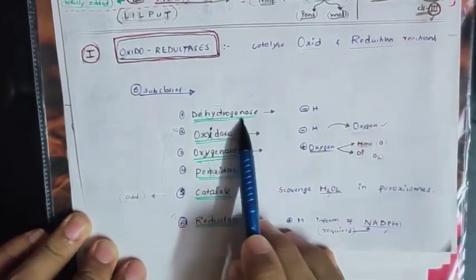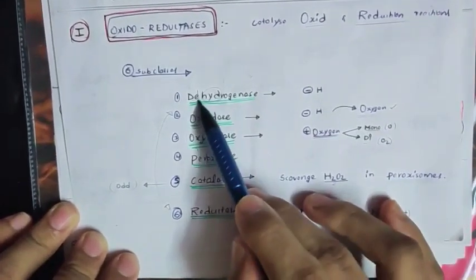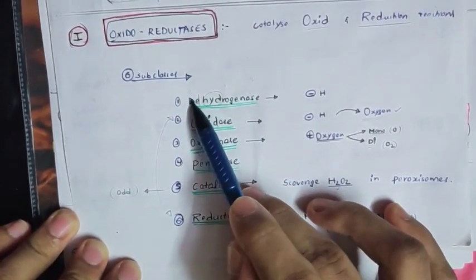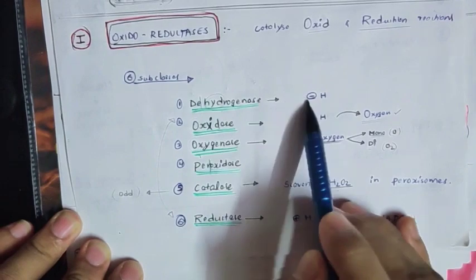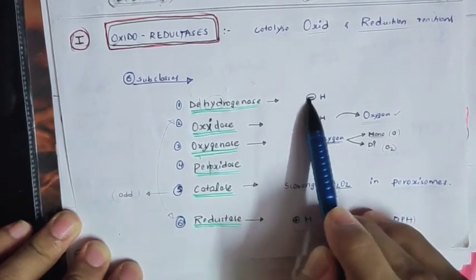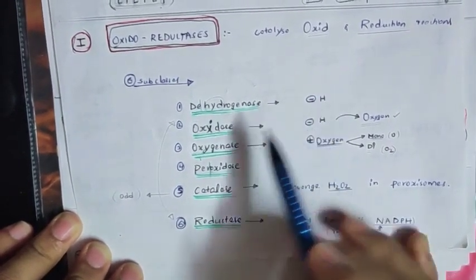The first subclass is Dehydrogenase. Dehydrogenase means removal of hydrogen atom — 'de' means removal of hydrogen atom.